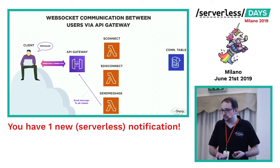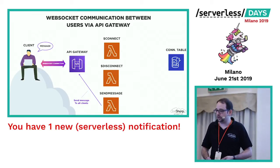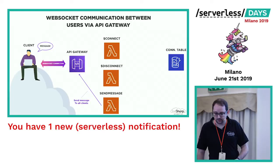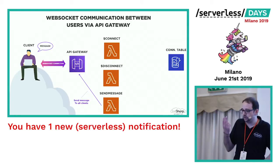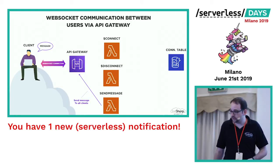We send a message to all the clients, so all the clients can speak to each other. In this first example, we created a simple basic chat, and it's very simple to do — we just used 3 Lambda functions.